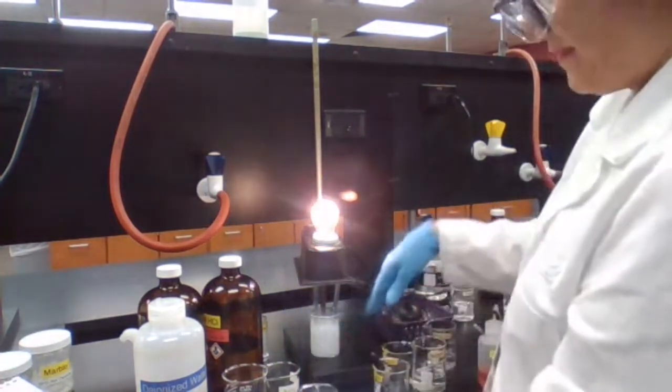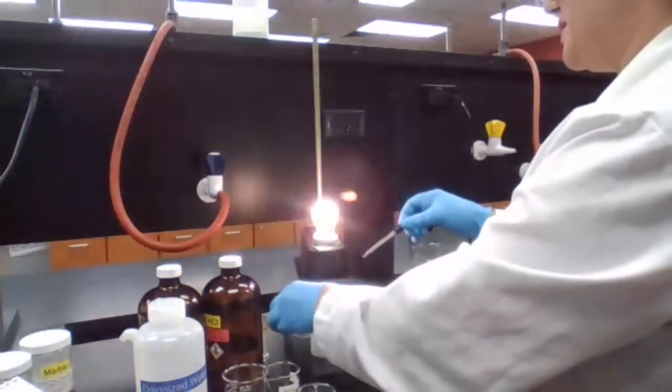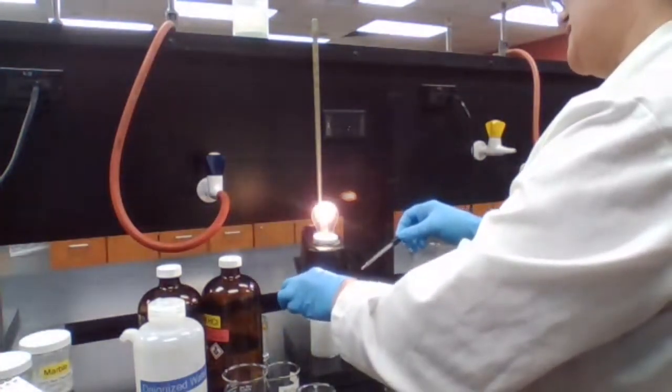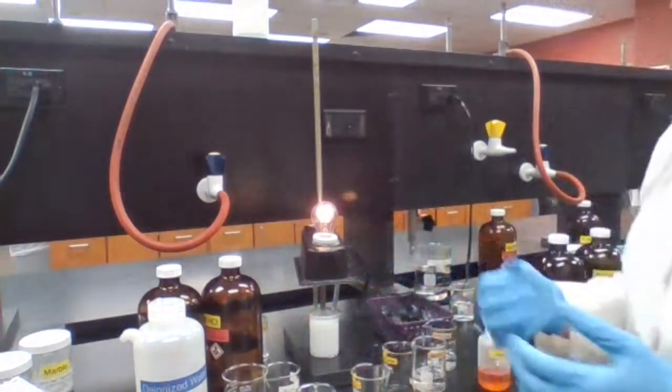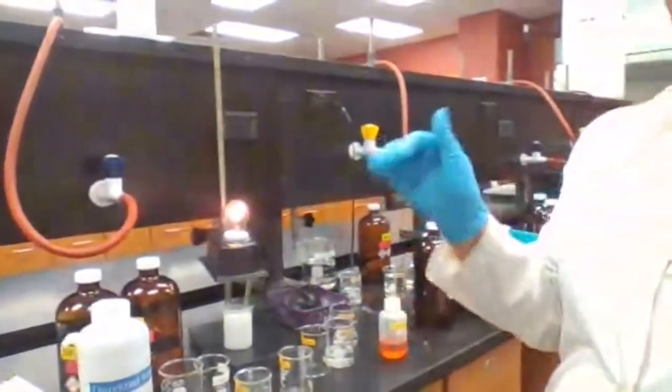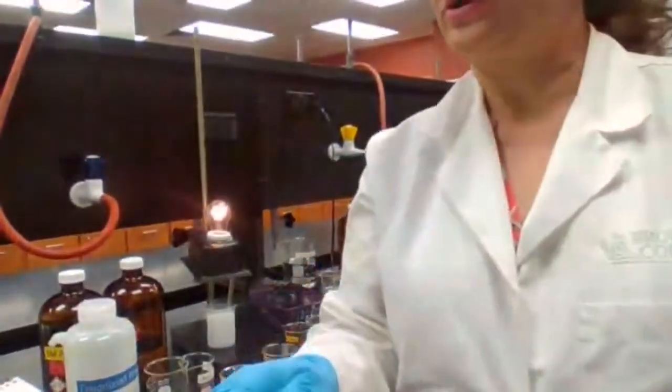If I have extra of the acid or extra of the base, obviously it's going to be an electrolyte. But if I add enough of each to neutralize both completely, it's going to be no light and no electrolyte.